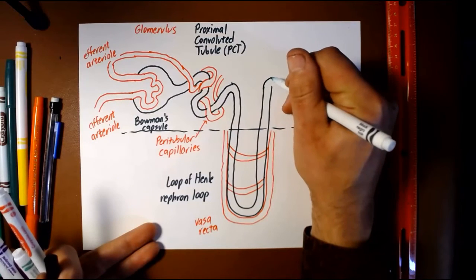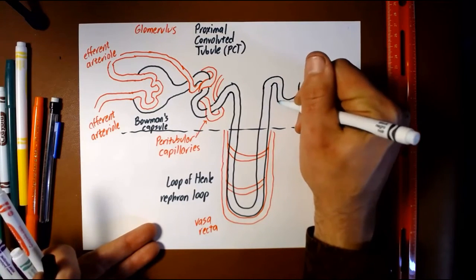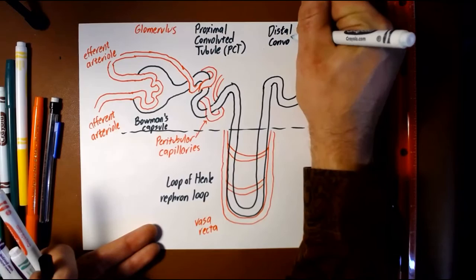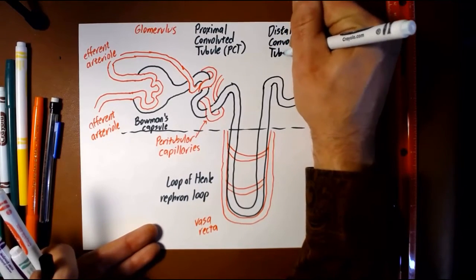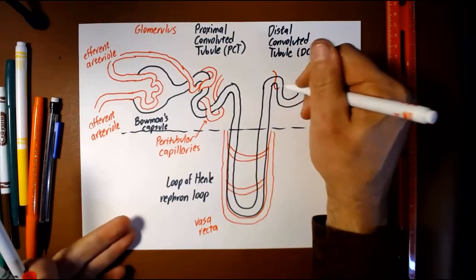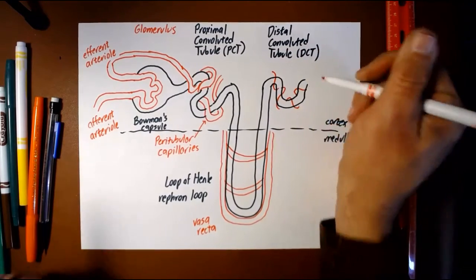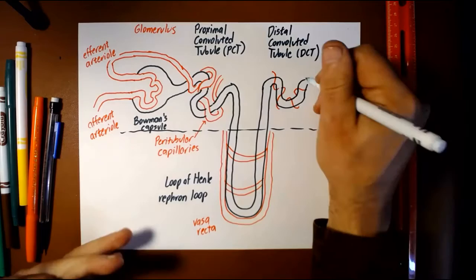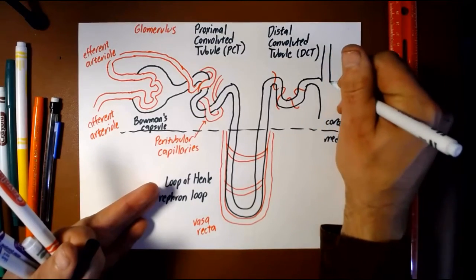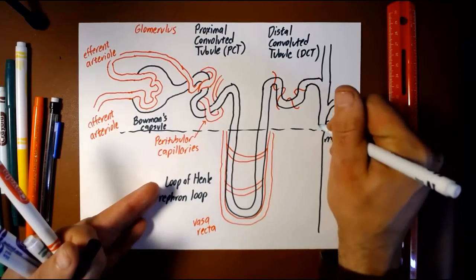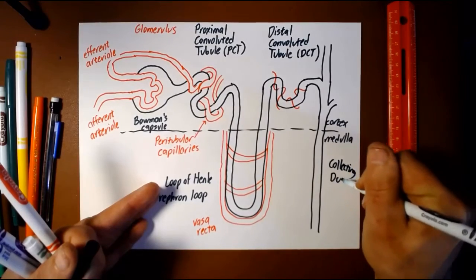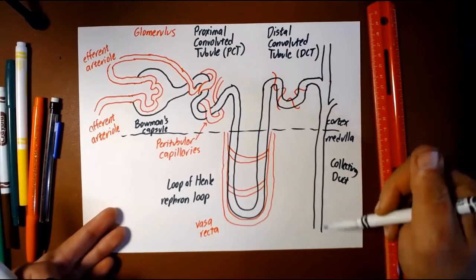After the loop of Henle, the urinary tubule does another twisty-turny bit called the distal convoluted tubule, or DCT, which has its own set of peritubular capillaries around it. That DCT then finally adds on to a collecting duct, which takes the stuff that is now on its way to becoming urine down toward the renal pelvis through the medulla.